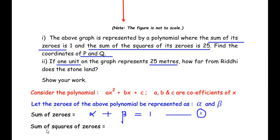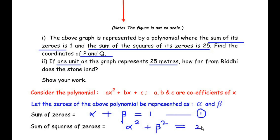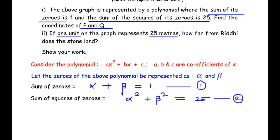The next statement is the sum of squares of zeros — that means we square each zero and add them: alpha² + beta². This is equal to 25, as given in the question. Let us call this equation 2.